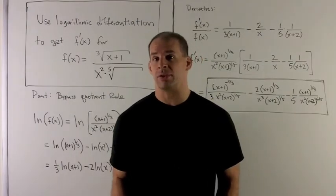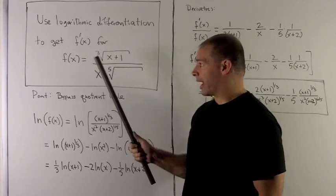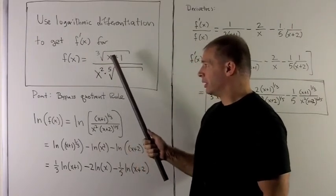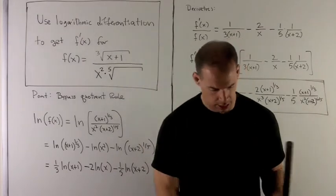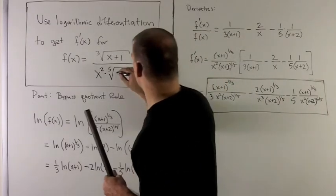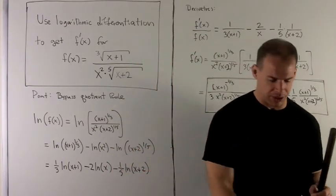Use logarithmic differentiation to get the derivative of f for f(x) equals the cube root of (x+1) over x squared times the fifth root of (x+2).